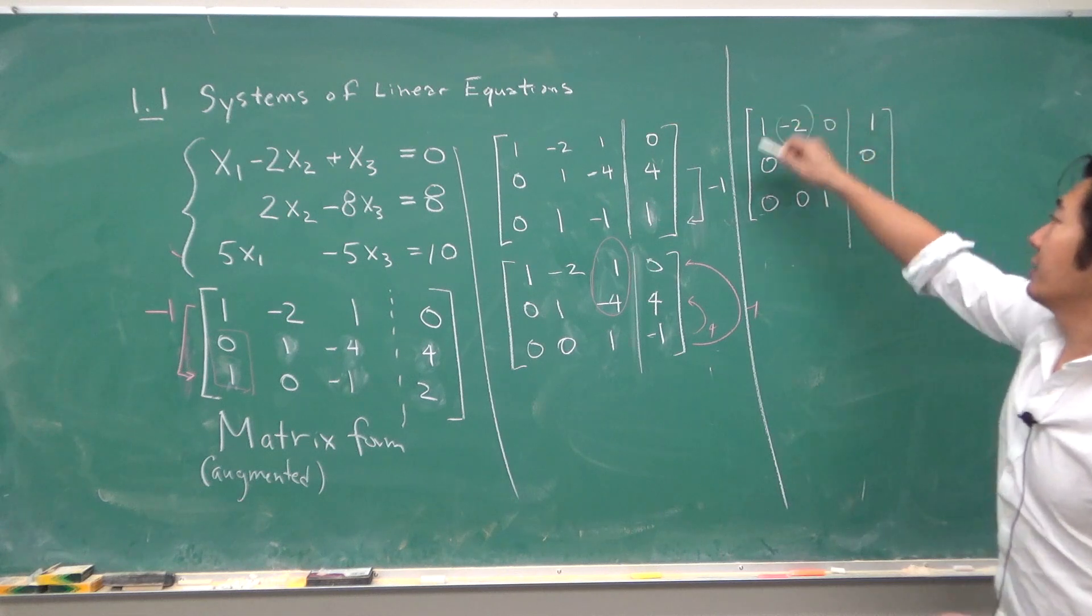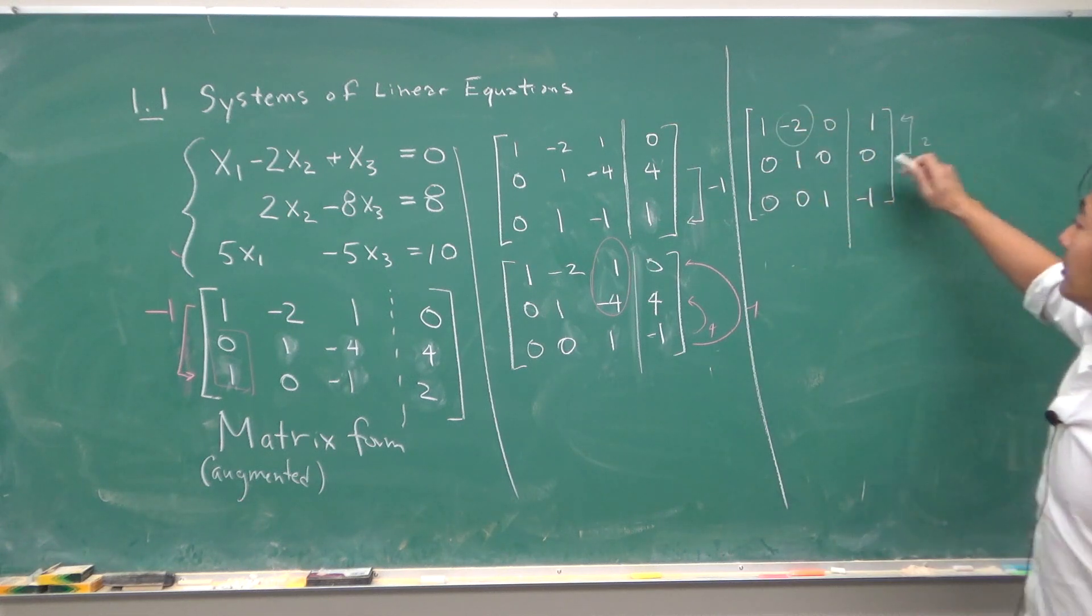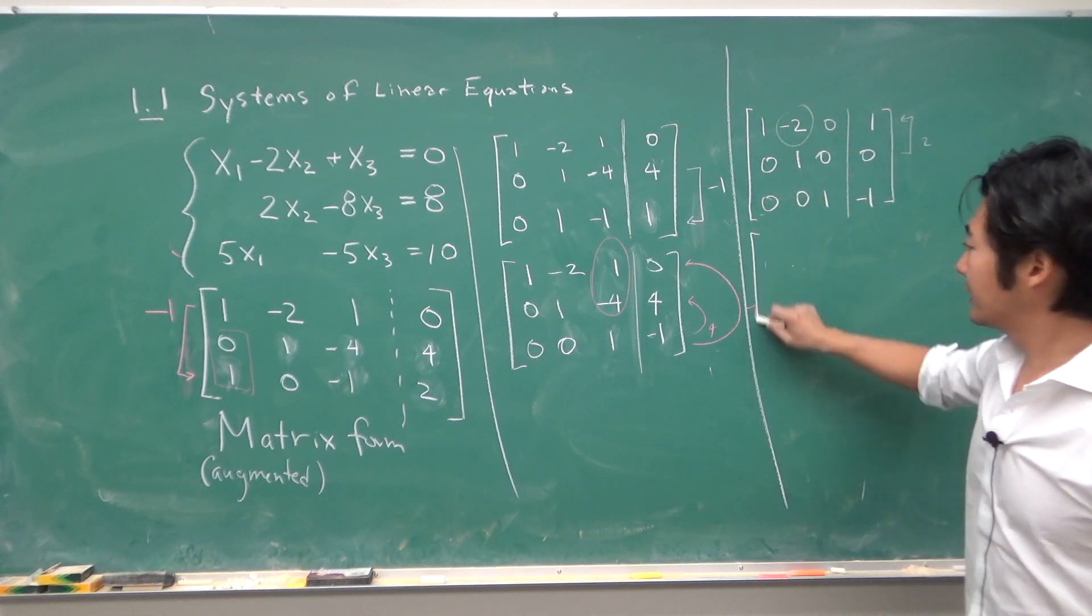We have one more step just to try to get rid of this. So we will add it in two times this row into here. And we finally get something like this.